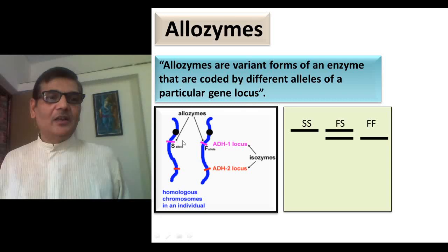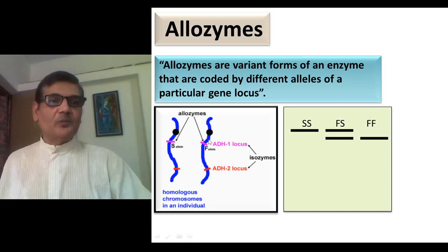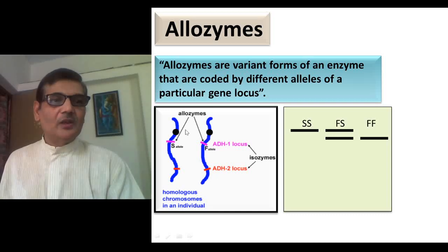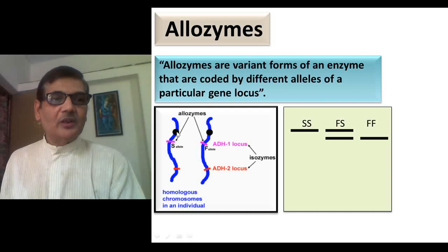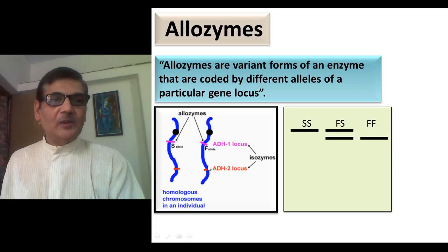In this diagram, you can see these two are homologous chromosomes. Both chromosomes have a centromere, so one arm is short and the other is long. In the long arm of both chromosomes, there is a gene locus called ADH1 locus, and on the same chromosome arm, the other gene locus is ADH2 locus.